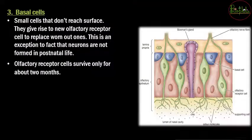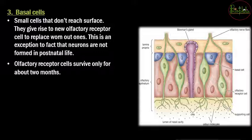The next type are the basal cells. These are small cells present at the base of the epithelium. They give rise to new olfactory receptor cells to replace old ones that have worn out. This is the exception we need to understand — normally neural cells do not regenerate after birth, but olfactory receptor cells form from basal cells, making this an exception.